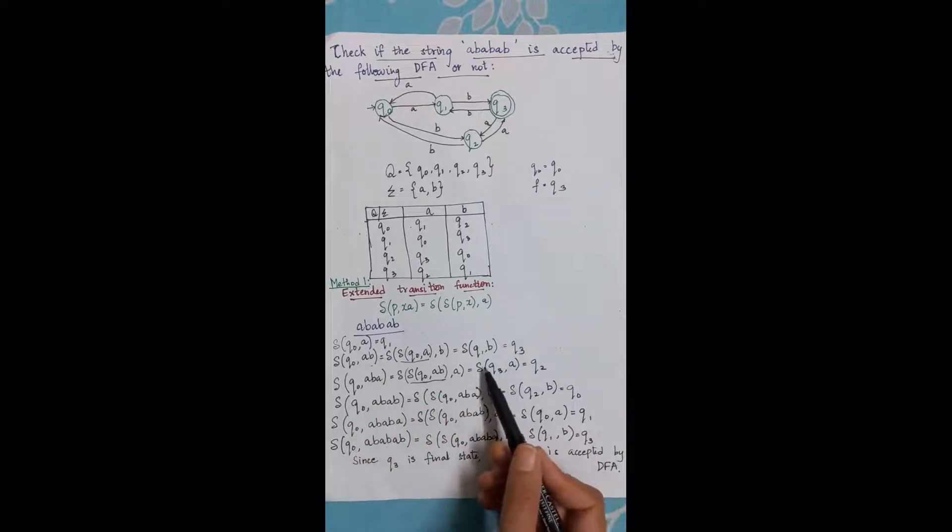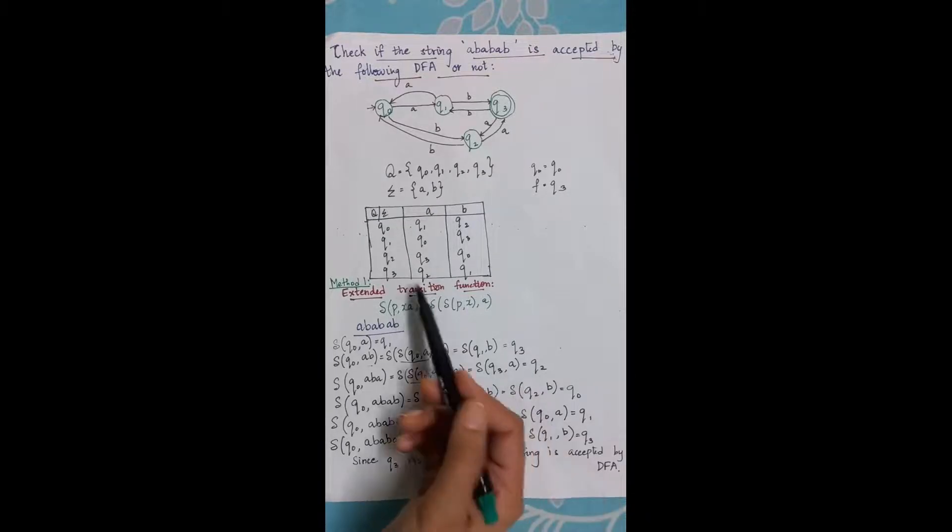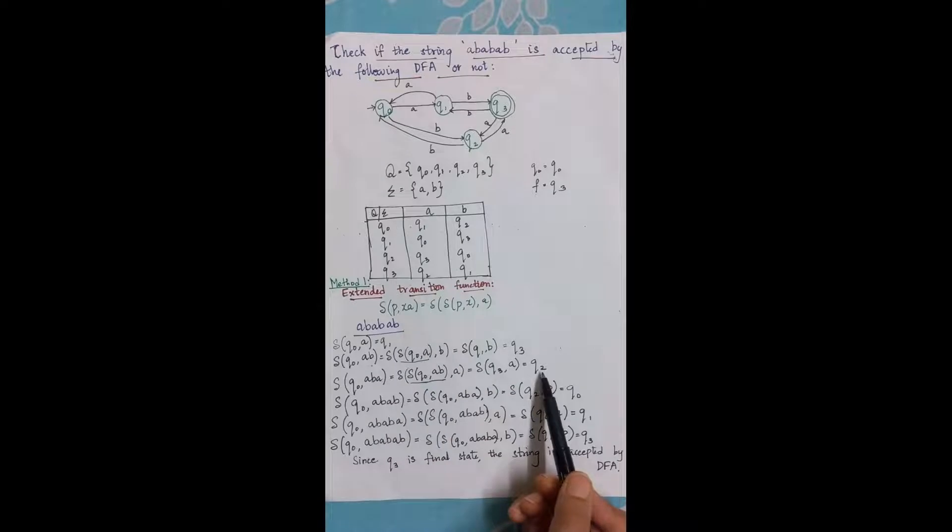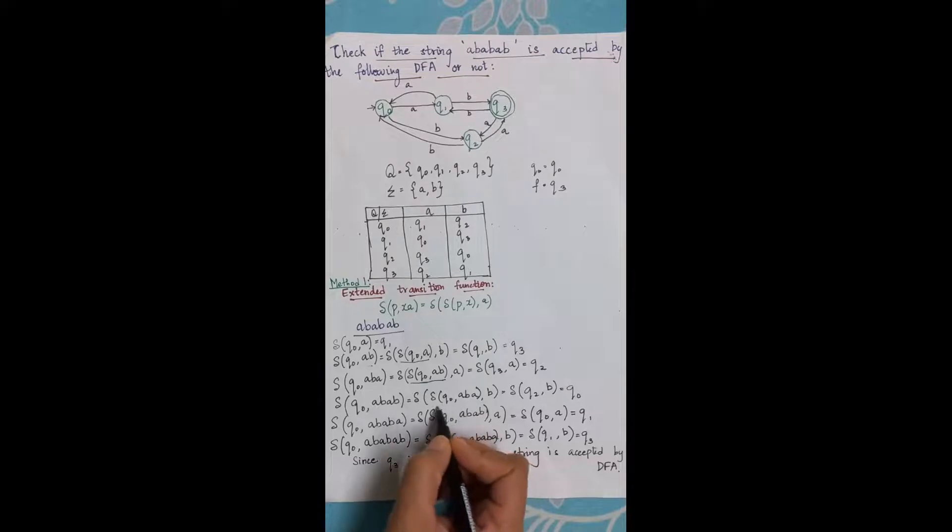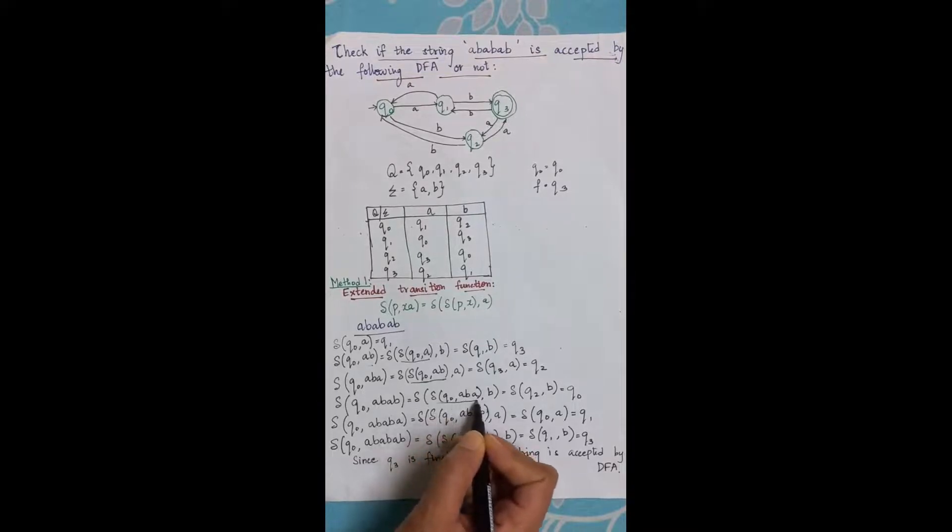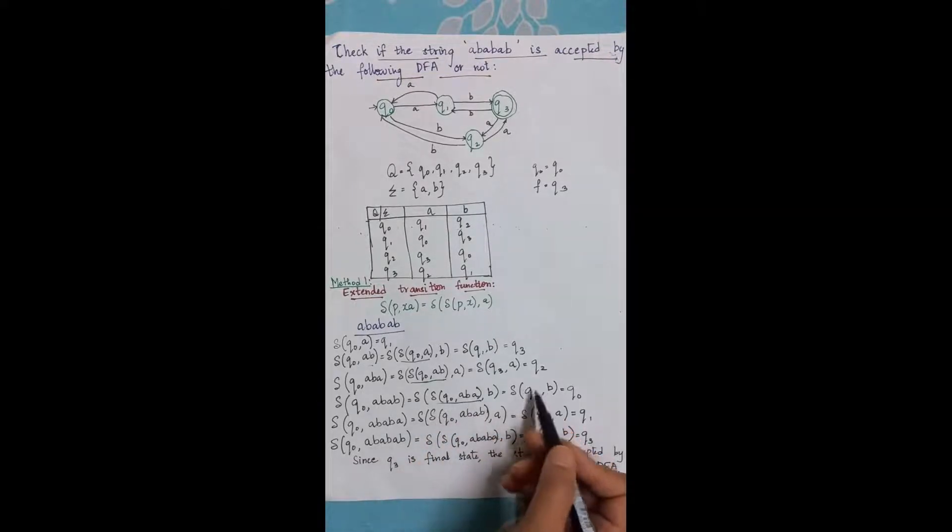It becomes delta of q0 comma abab is equal to delta of delta of q0 comma aba. This again is derived from my previous line and gives me the answer as q2. So I get delta of q2 comma b is equal to q0.